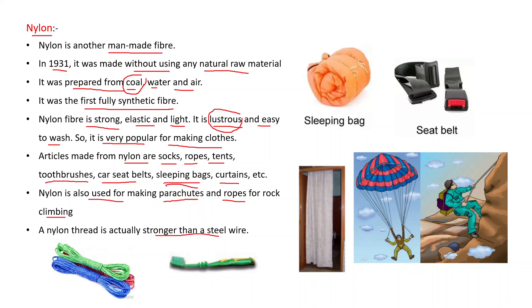Nylon thread is very strong — it is stronger than steel — that is why it is used to make parachutes and ropes for rock climbing. You can see the different diagrams: curtain, parachute, rock climbing using a nylon rope, seat belts, brush, and nylon rope.